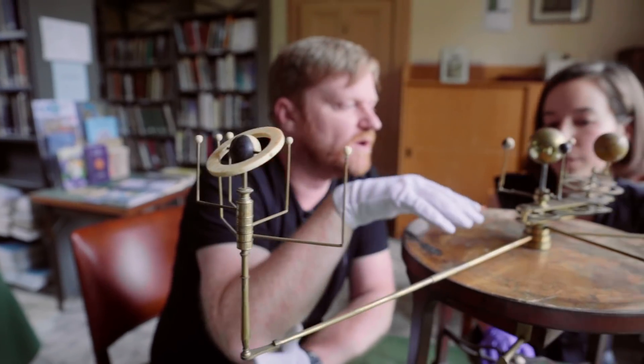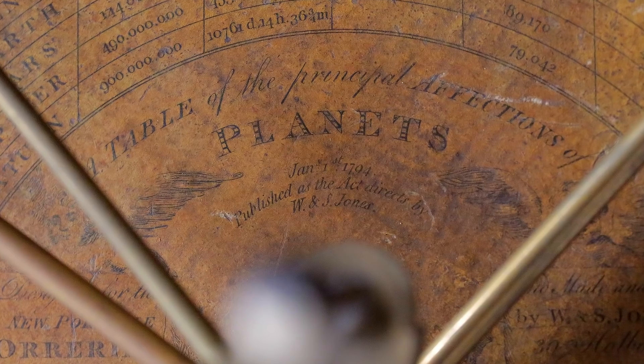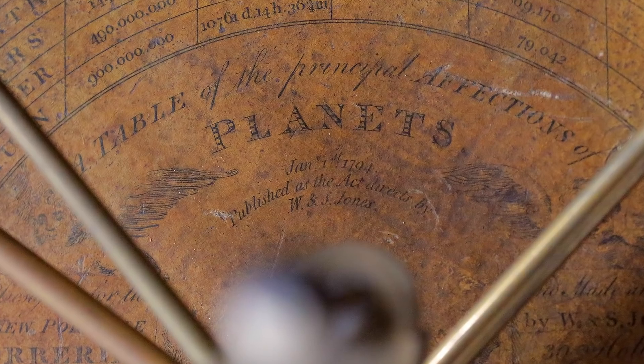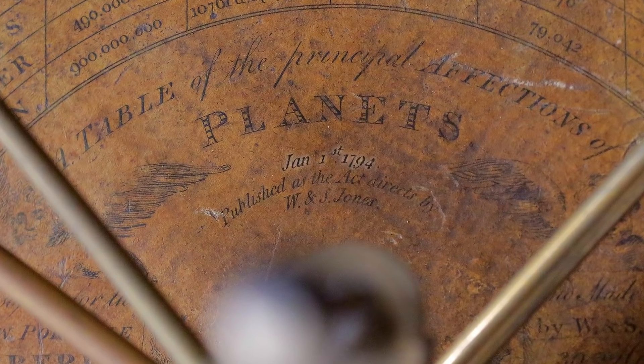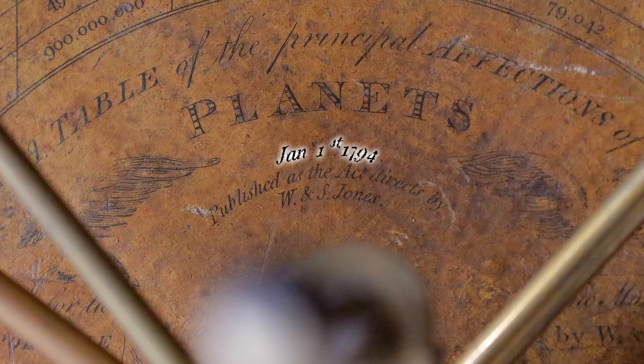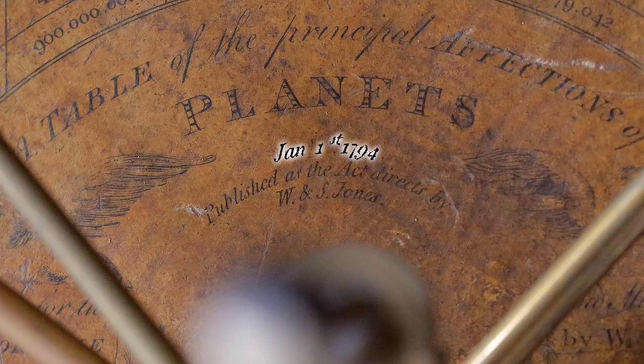You were telling me though, around the time this was made, Uranus potentially had been discovered. Yeah, so we have on the etching here that it was made in 1794 and that was 13 years after the discovery of Uranus.